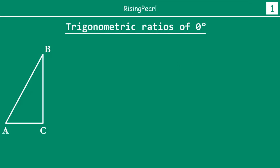Whenever we talk about trigonometric ratios it's always about a particular angle. So in this case our goal is to find out the six trigonometric ratios for zero degree angle. We always start out by drawing a right triangle. Here we have a right triangle ABC such that angle C is 90 degrees, and we want to find out the trigonometric ratios for angle A. Because we want ratios for zero degrees, our goal will be to make angle A zero degrees.